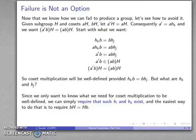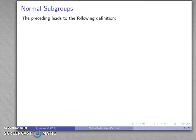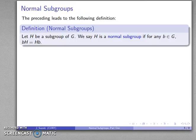That seems to be the requirement. So we now have the following definition: let H be any subgroup of G. We say that H is a normal subgroup if for any element b of G, the left and right cosets are the same.